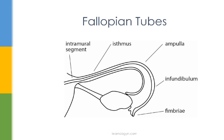Here we have the fallopian tube. The fallopian tube consists of the fimbriae, the infundibulum, the ampulla, the isthmus, and the intramural segment. It sometimes helps to remember the fimbriae as little fingers and the infundibulum as a funnel. The ampulla is the widest part of the fallopian tube, and this is actually where most ectopic pregnancies occur. The isthmus is the thinnest section of the fallopian tubes.